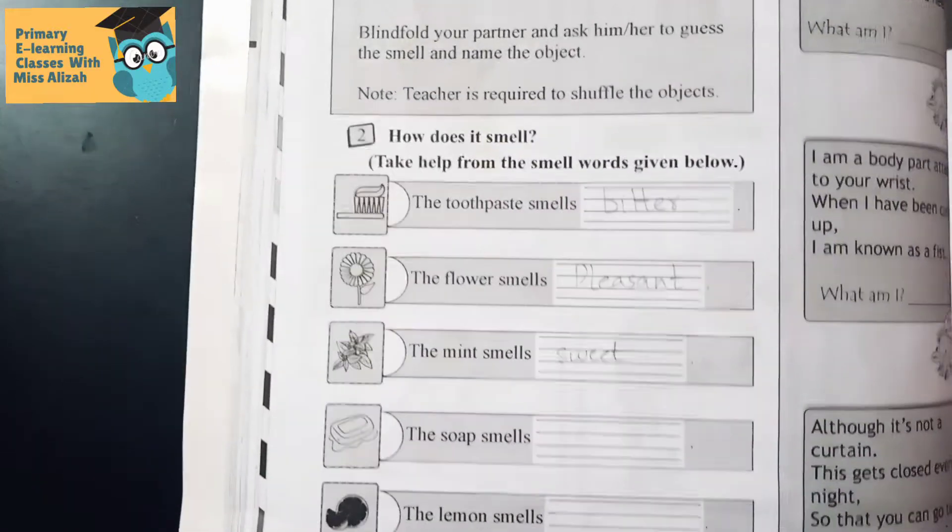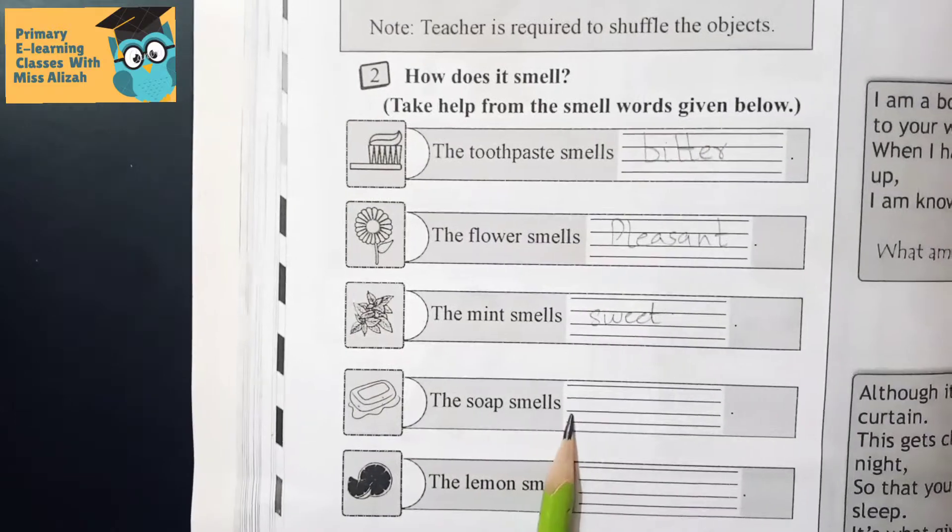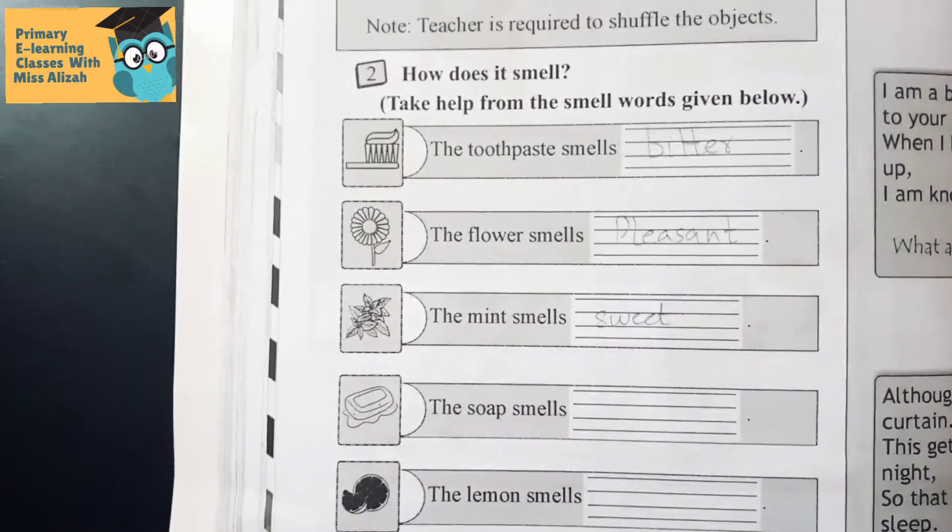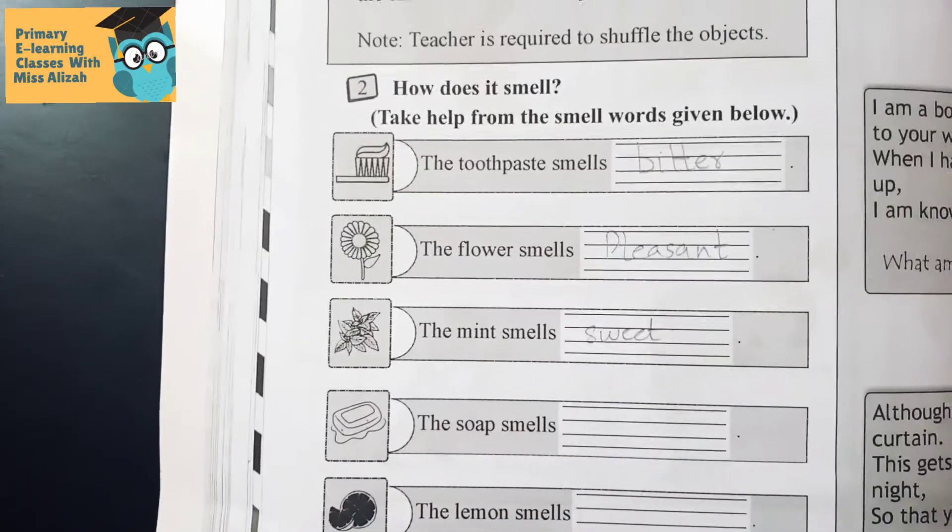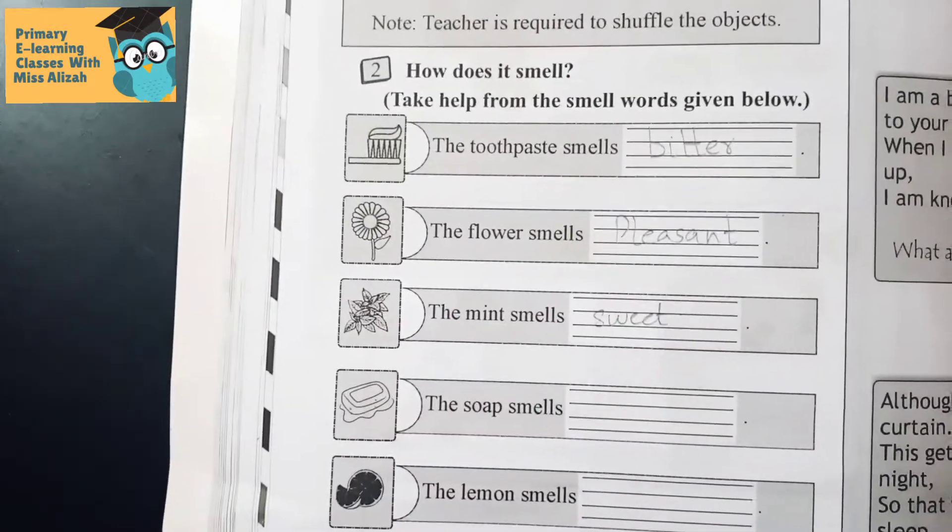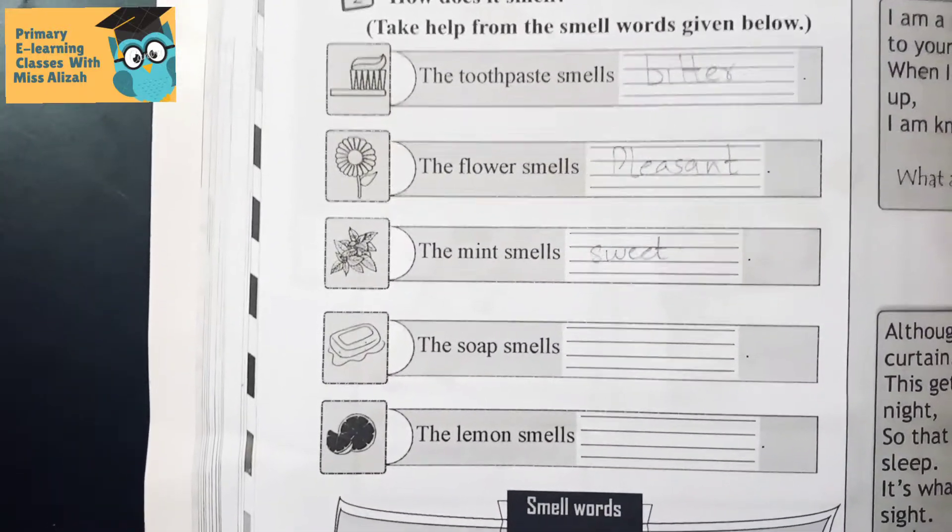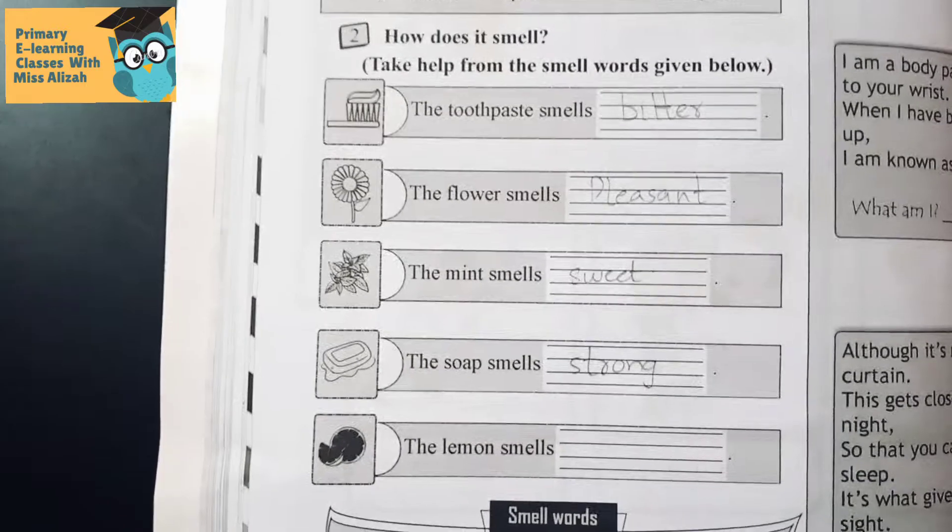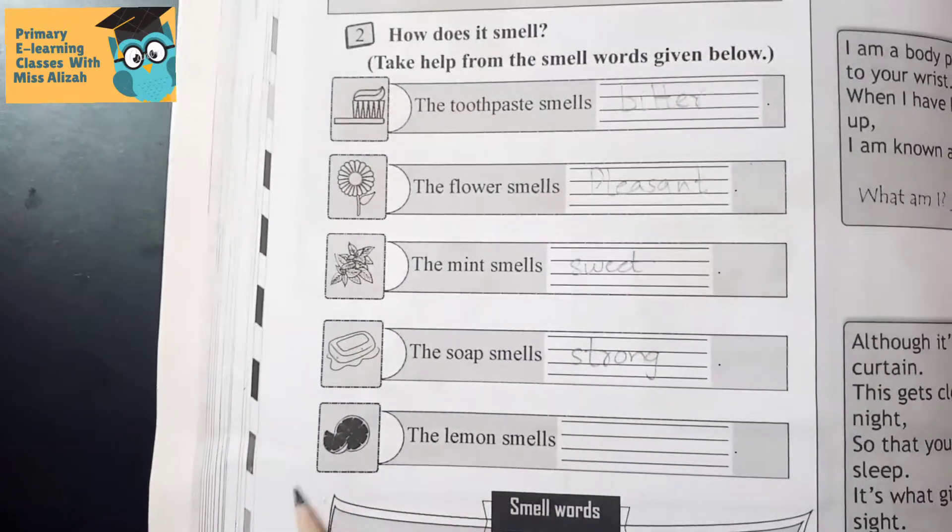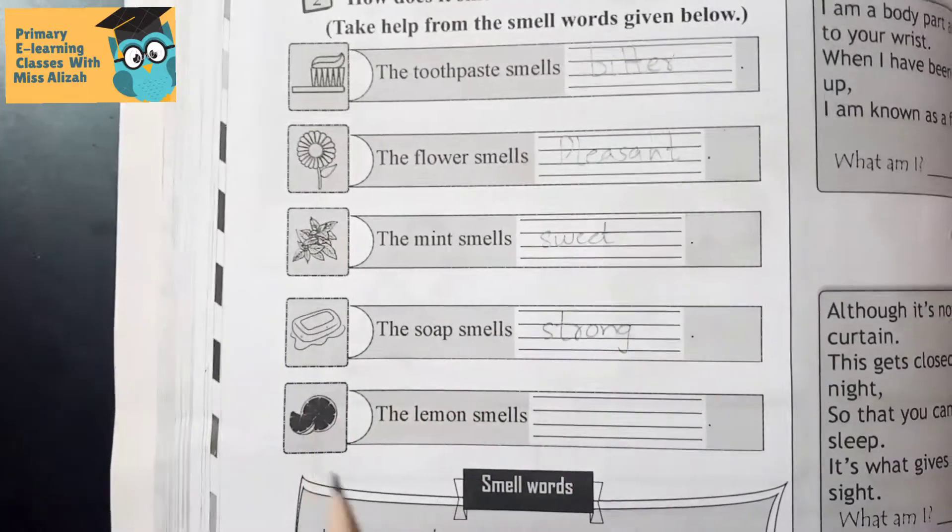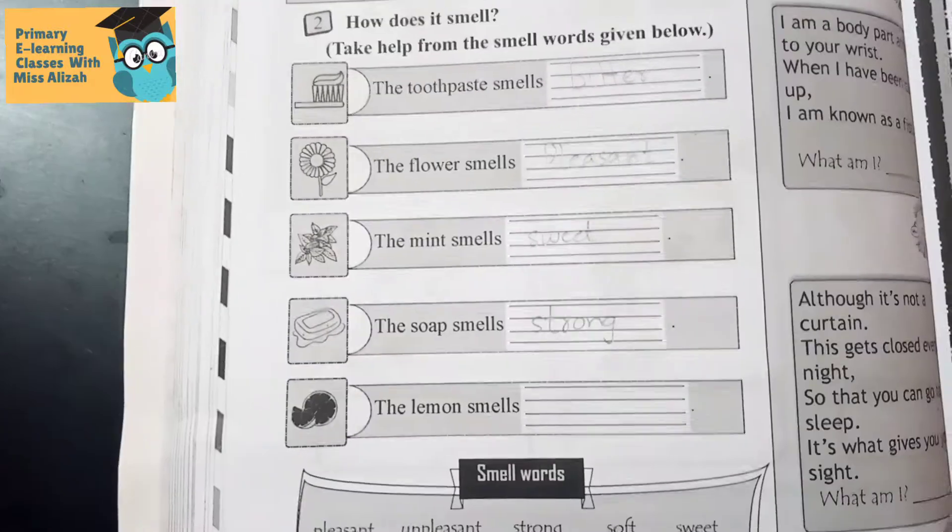Next we have soap. The soap smells strong. What do you have to write? Strong. The last one we have is lemon. The lemon smells - what do you think? The lemon smells very fresh and fragrant. So you can write fresh slash strong.